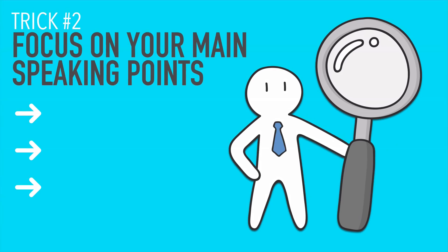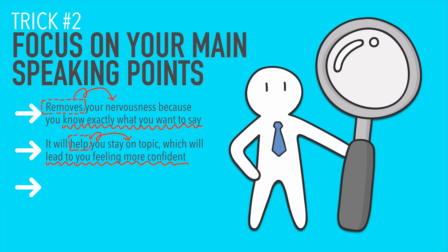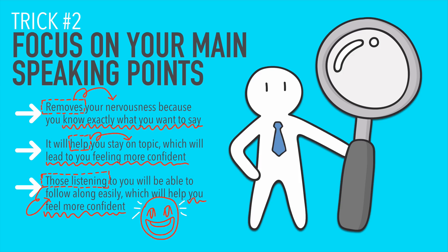Number two: focus on your main speaking points. This removes your nervousness because you know exactly what you want to say. You're not focusing on ten things — only the main points you want to mention. It will also help you stay on topic, which leads to feeling more confident. You won't get confused, and those listening will be able to follow along easily, which will again help you feel more confident because of their response.